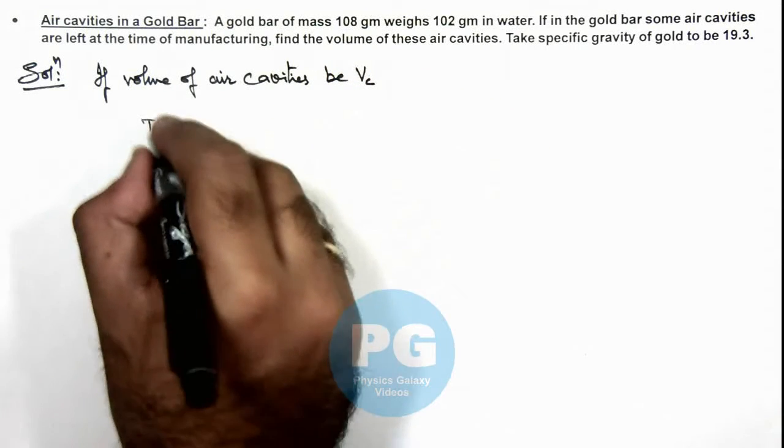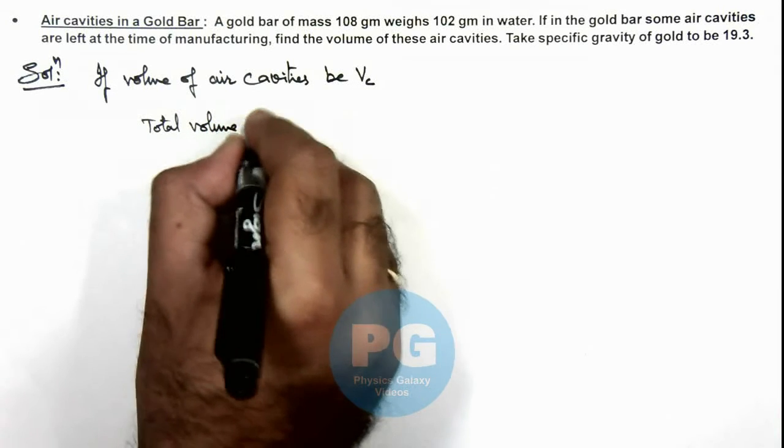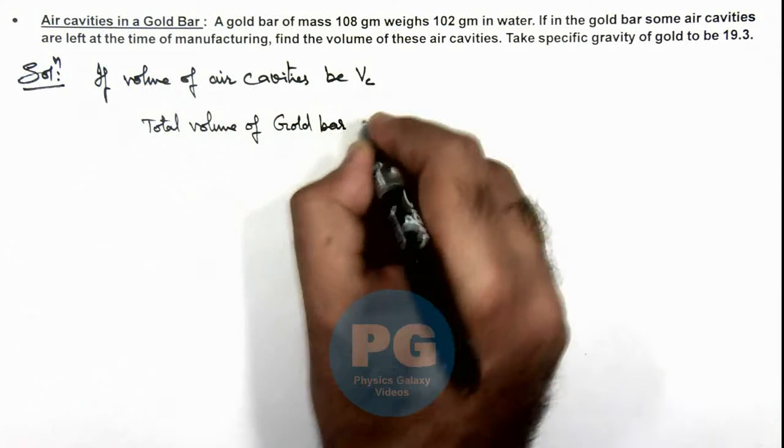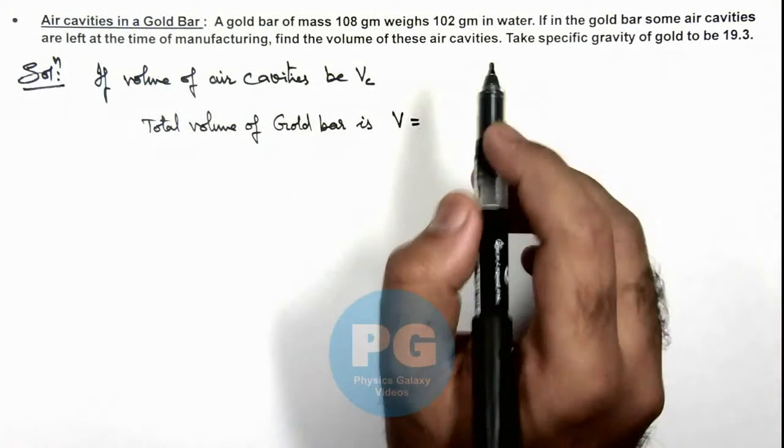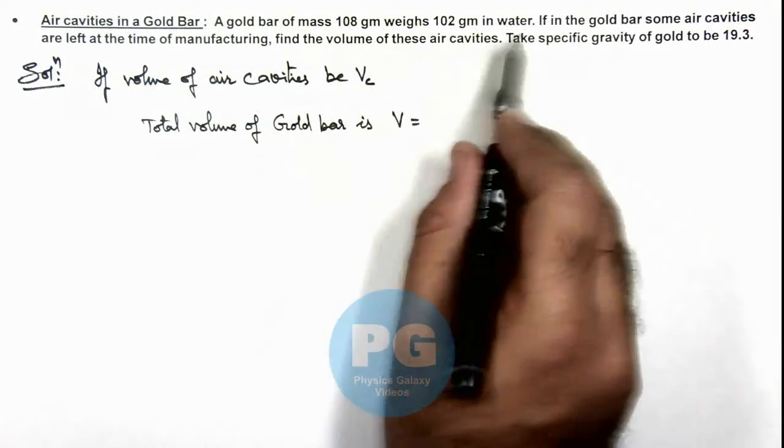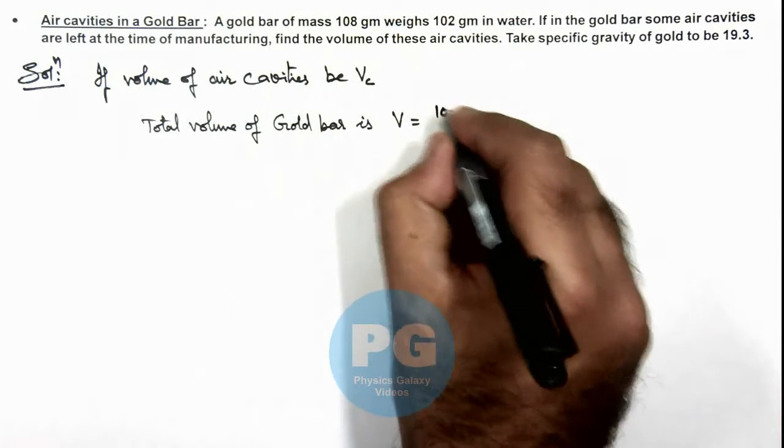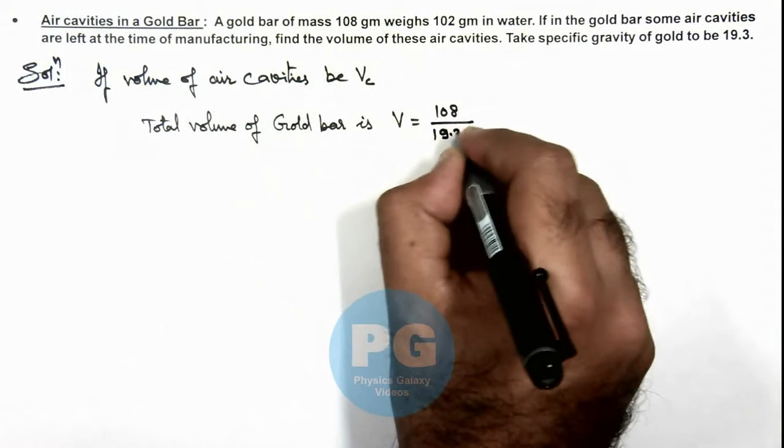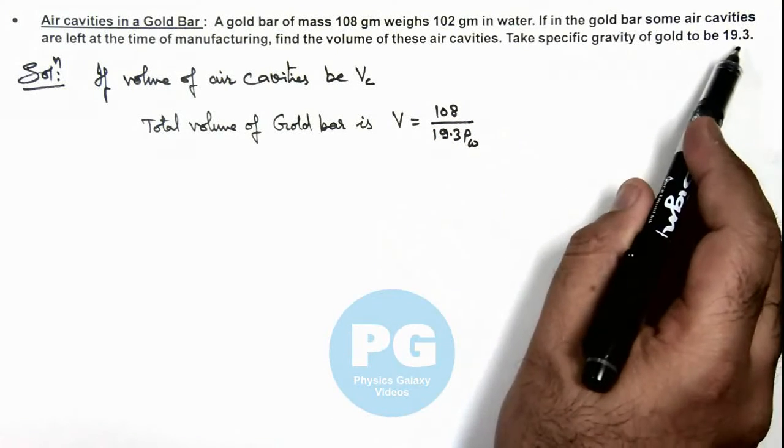Total volume of bar we can write as: in water it weighs 102 grams and in air it weighs 108 grams, so this is 108 divided by 19.3 times ρ of water, as the specific gravity of gold is 19.3.